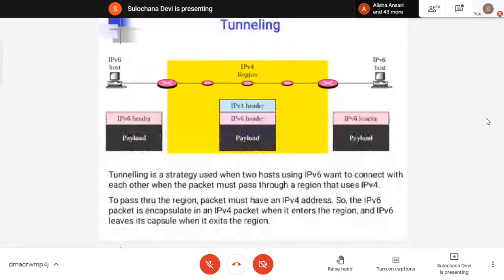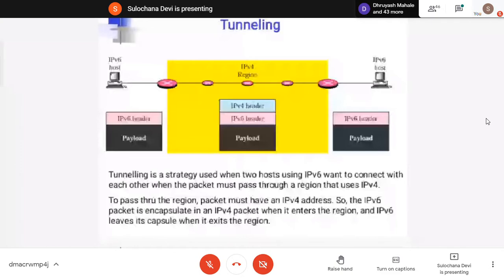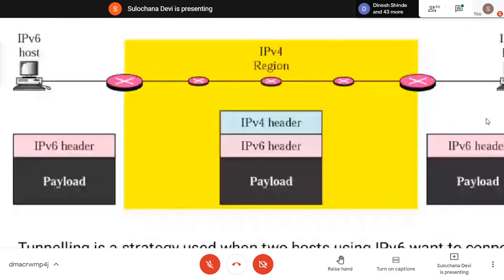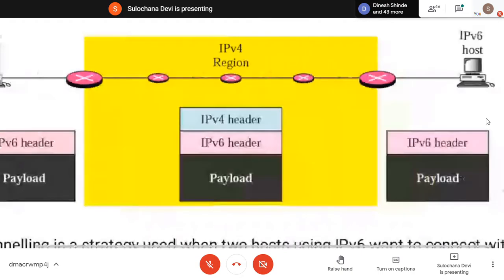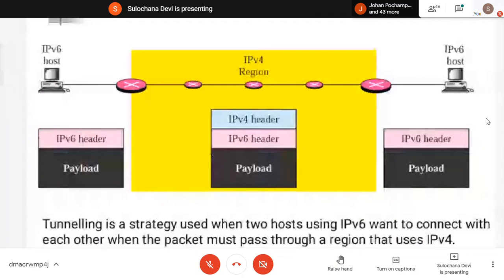Source is on IPv6, destination also on IPv6, but in between the network through which the packet is going to pass is still working on IPv4. When the packet with IPv6 header reaches a router connected to IPv4, the IPv6 packet and payload is encapsulated in the IPv4 header. The last router of the IPv4 region removes the outer header and delivers it in the form of IPv6 header and data. That is the second technique — tunneling.